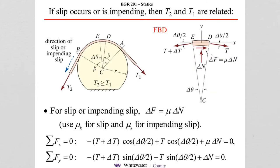Like I said, I'm not going to spend a lot of time in the derivation of this. The book does a great job of it, but it's saying, let's suppose that there is impending slip when T2 and T1 are related. How are they related?